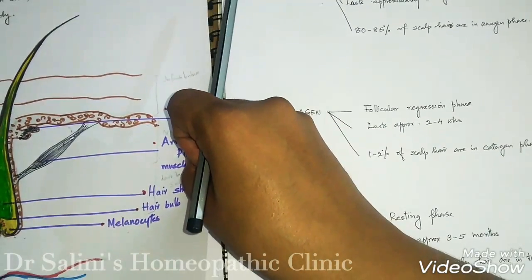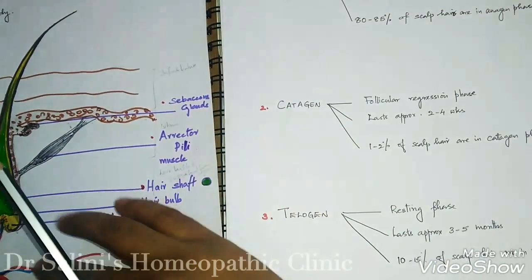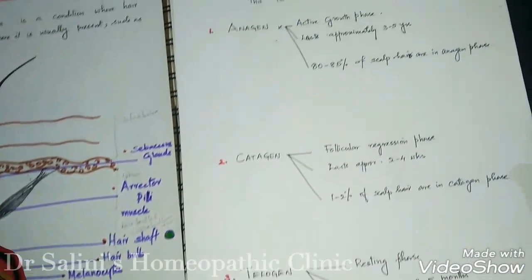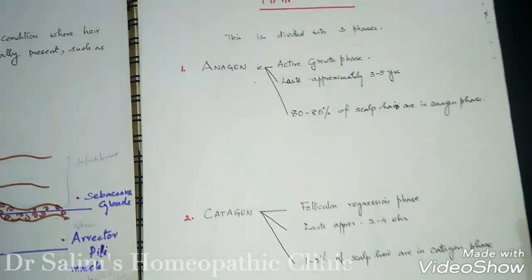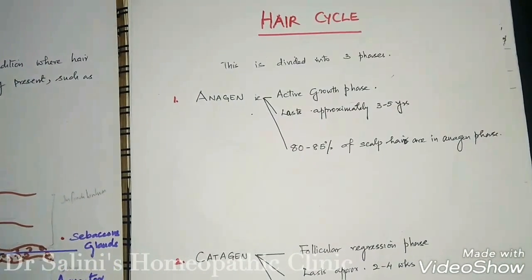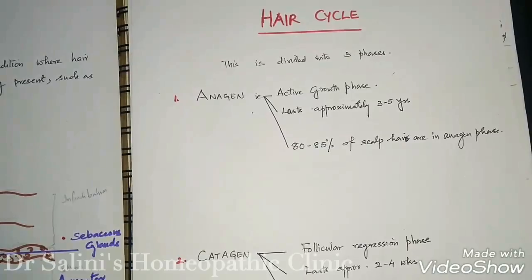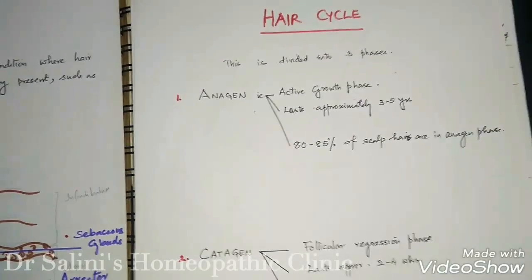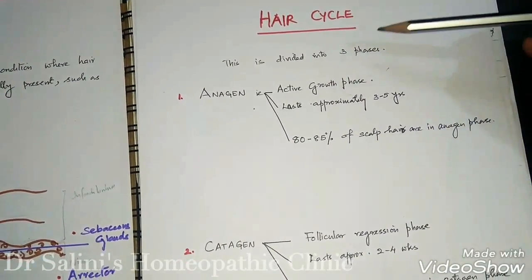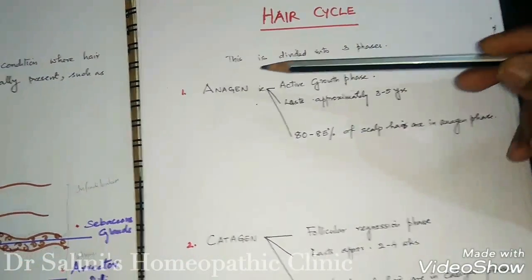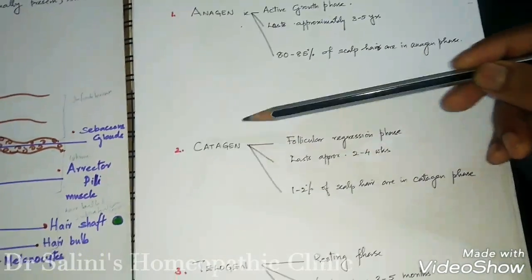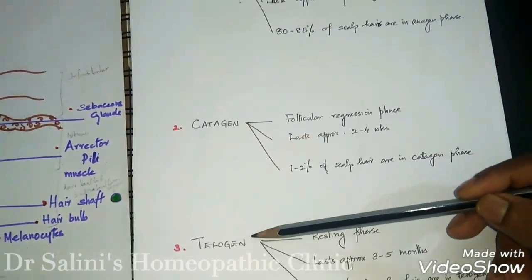Before we study in detail about hair loss and scars, we should know the basic hair cycle. The hair cycle is divided into three phases: anagen, catagen, and the telogen phase.